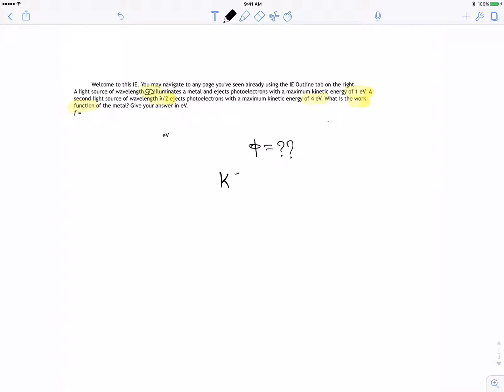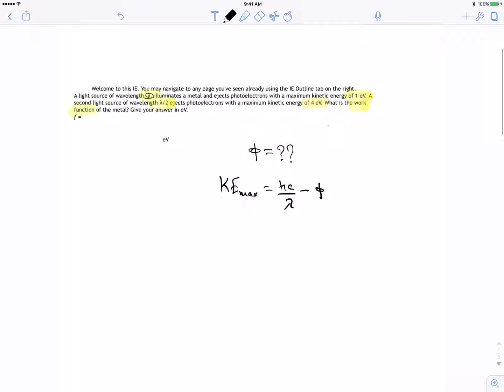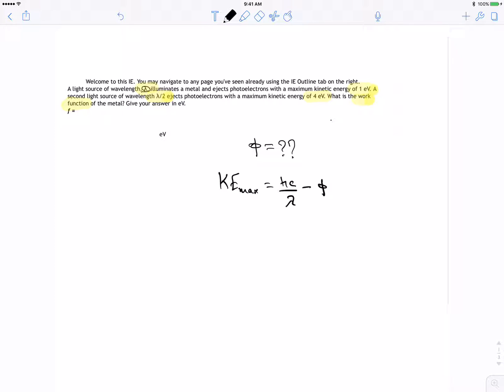We're going to use this equation: KE_max equals hc divided by lambda minus the work function. For the first one, the kinetic energy of 1 equals